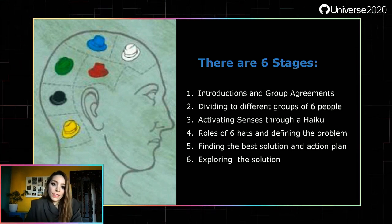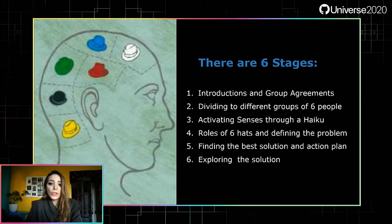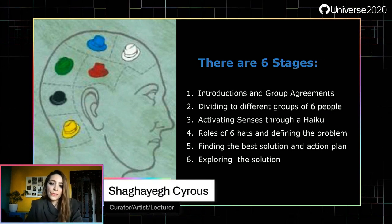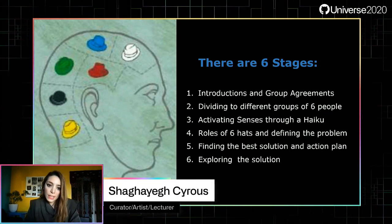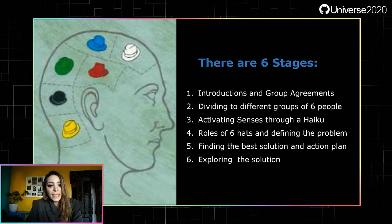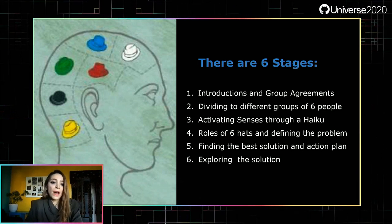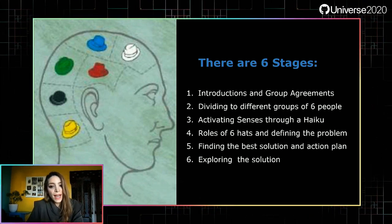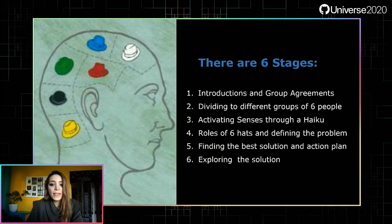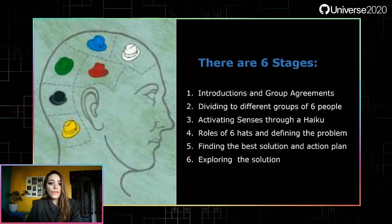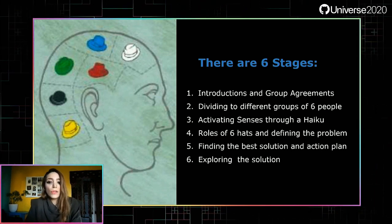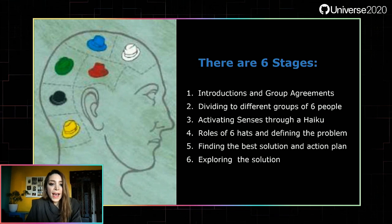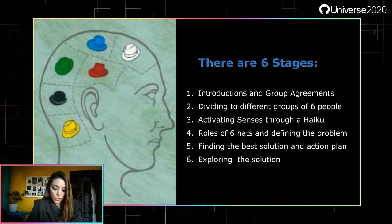The six stages are: one, introductions and group agreements; two, dividing into different groups of six people; three, activating senses through a haiku; four, roles of the six hats and dividing the problem; five, finding the best solution and creating an action plan; and six, explore the solution.